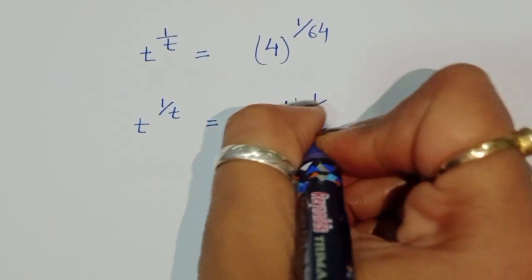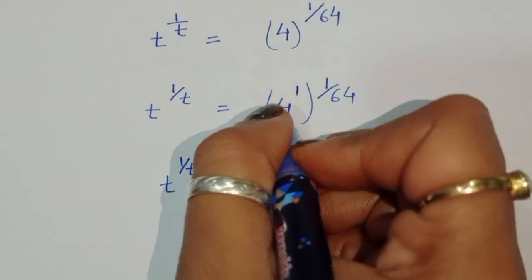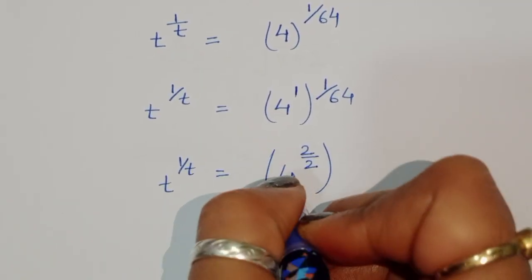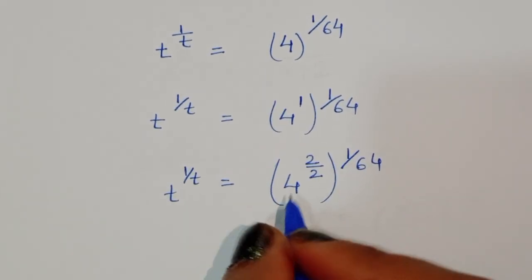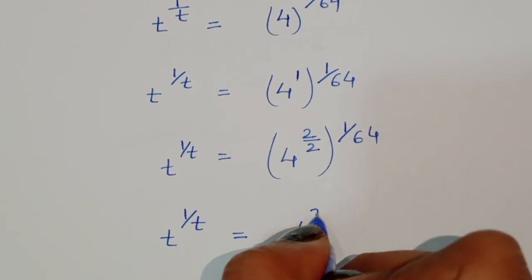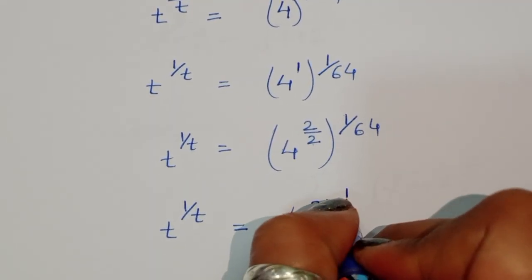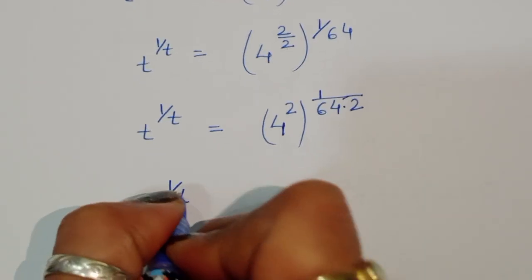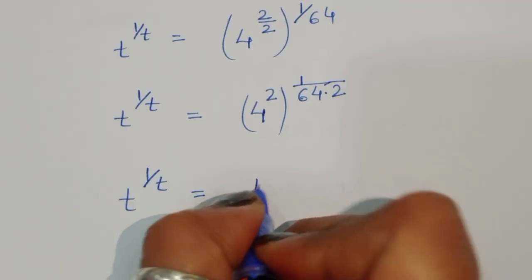In place of 1 we can write 2 by 2, so 4 power 2 by 2, that value is 1 upon 64. Now again we can write t power 1 upon t is equal to 4 power 2, and here 1 upon 64 times 2 — that is 1 upon 128. Now t power 1 upon t is equal to 4 power 2, and 4 power 2 is 16.